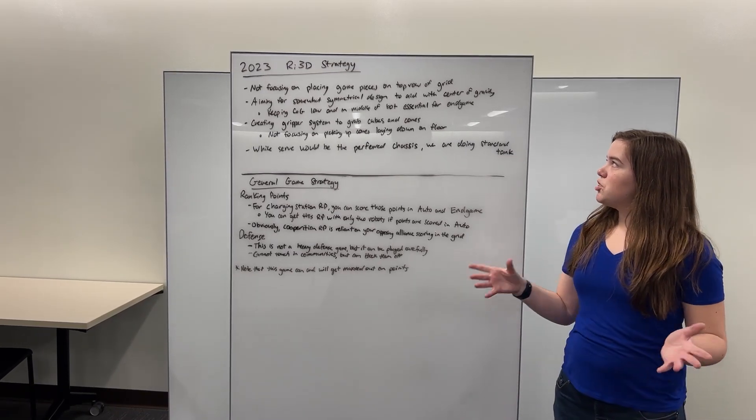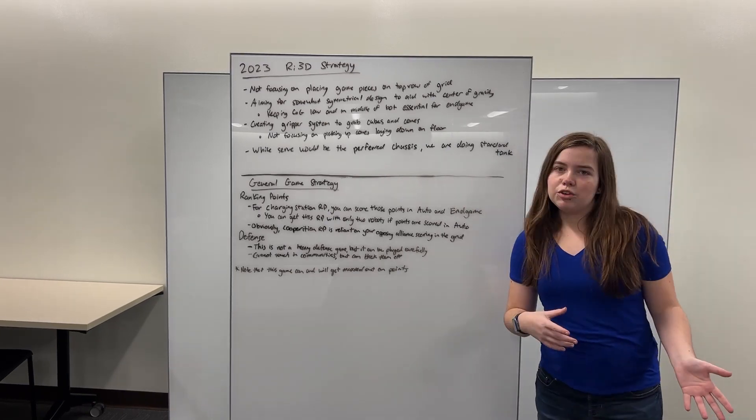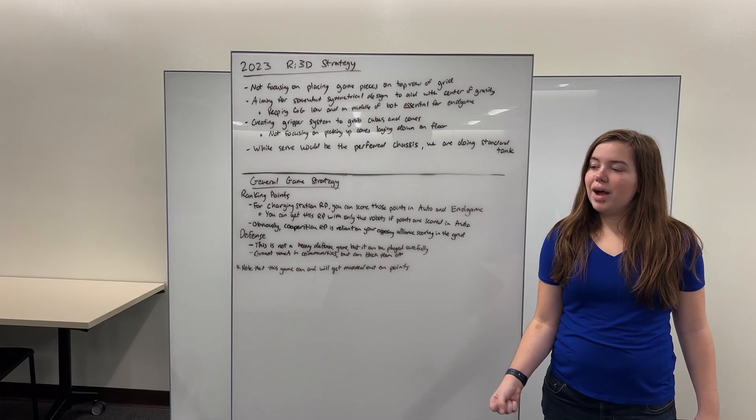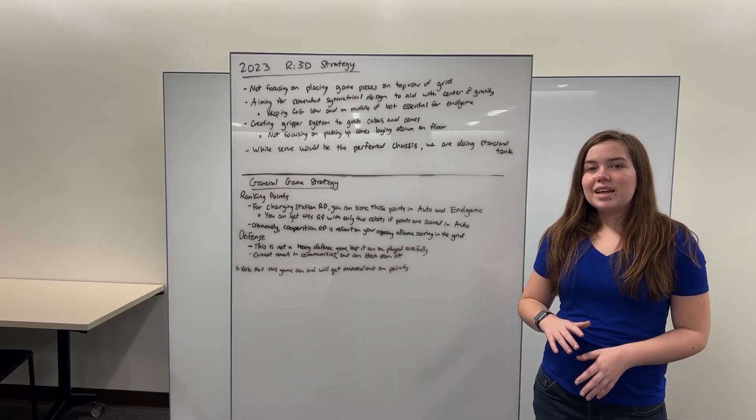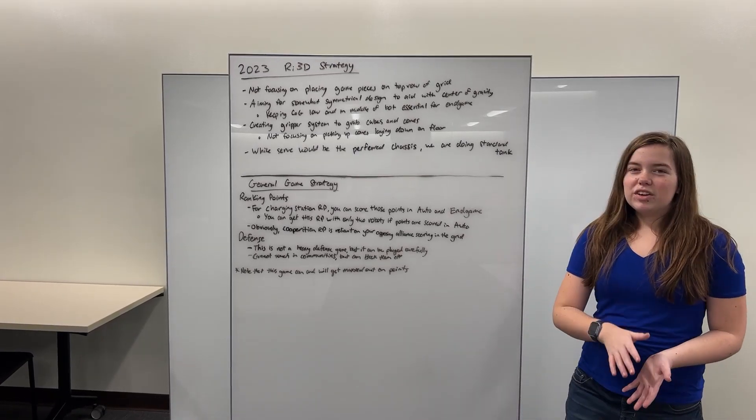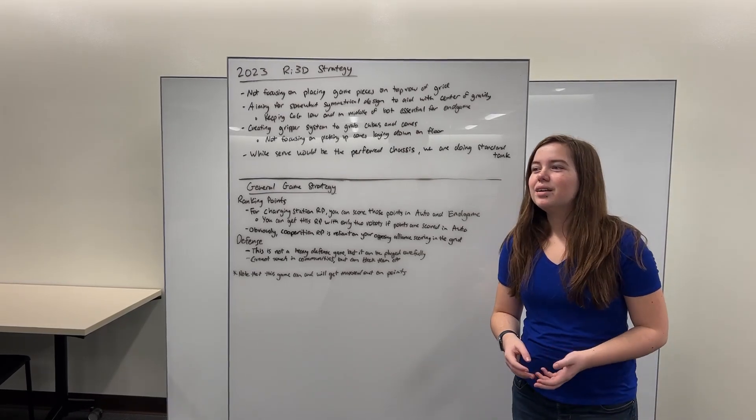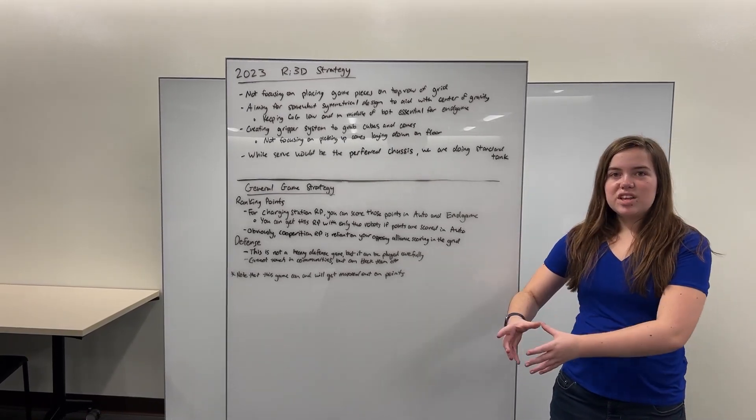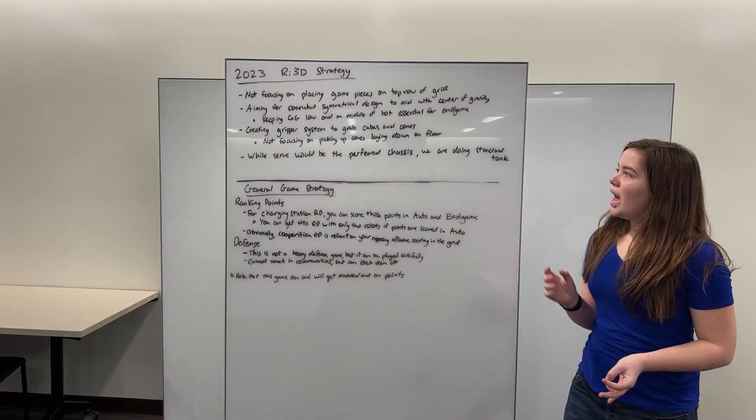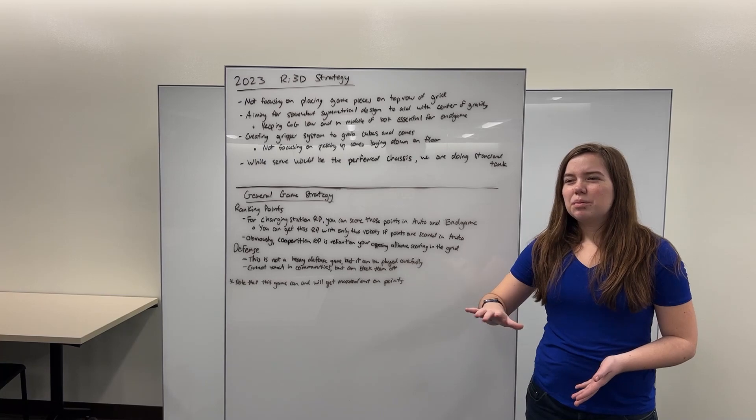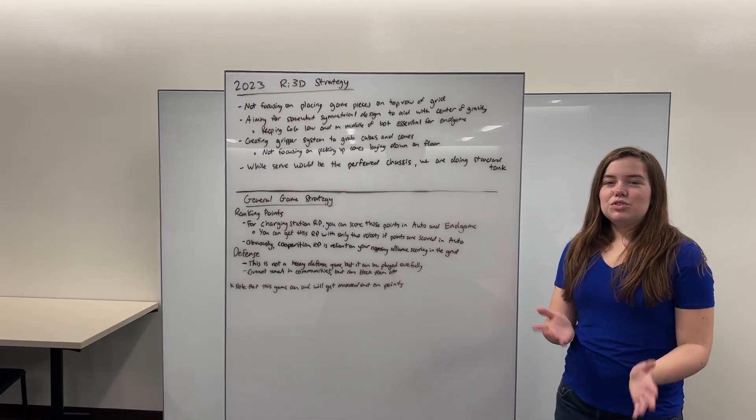Secondly, we are aiming for a somewhat symmetrical design to help aid with our center of gravity. Obviously center of gravity is where the center of all your weight is on your robot, and especially with a balancing end game this year, you are going to be very conscientious of where that center of gravity is on your robot. So keeping it low and in the center would be very useful. That is our goal here because we want to be able to balance on the platform for end game.